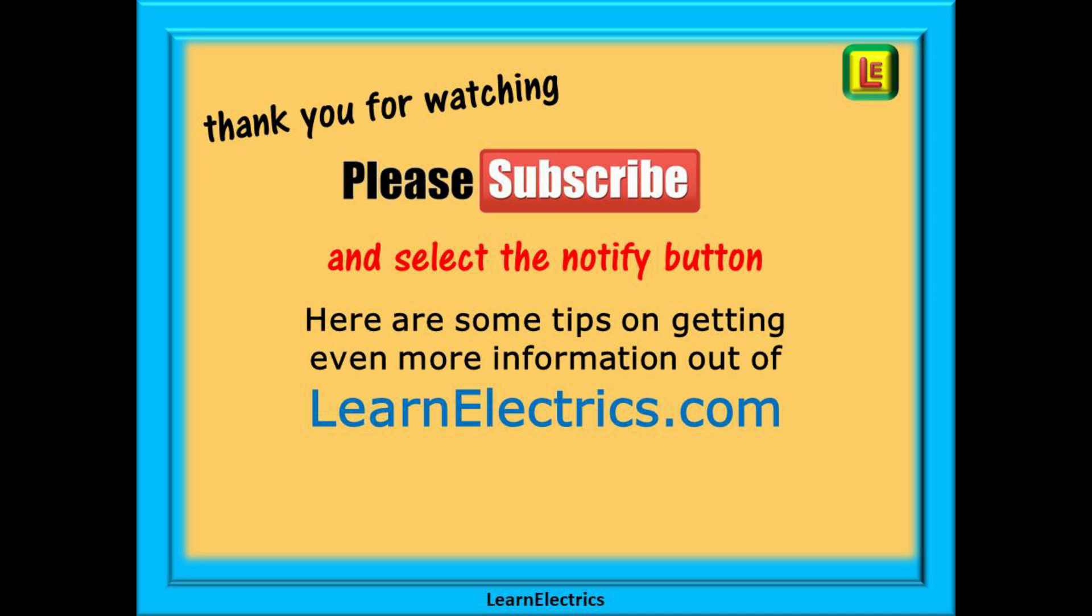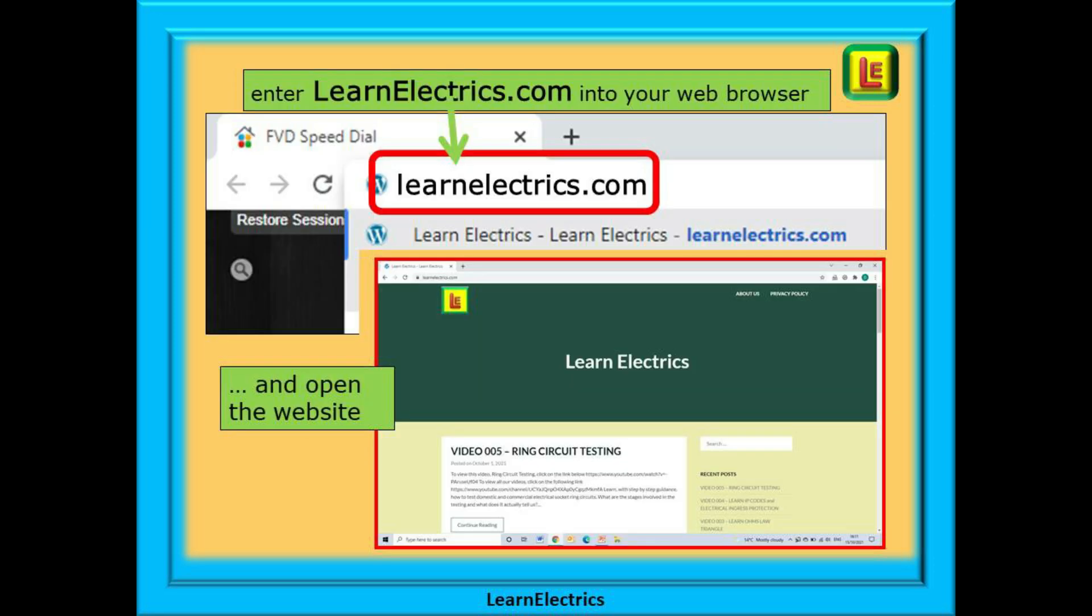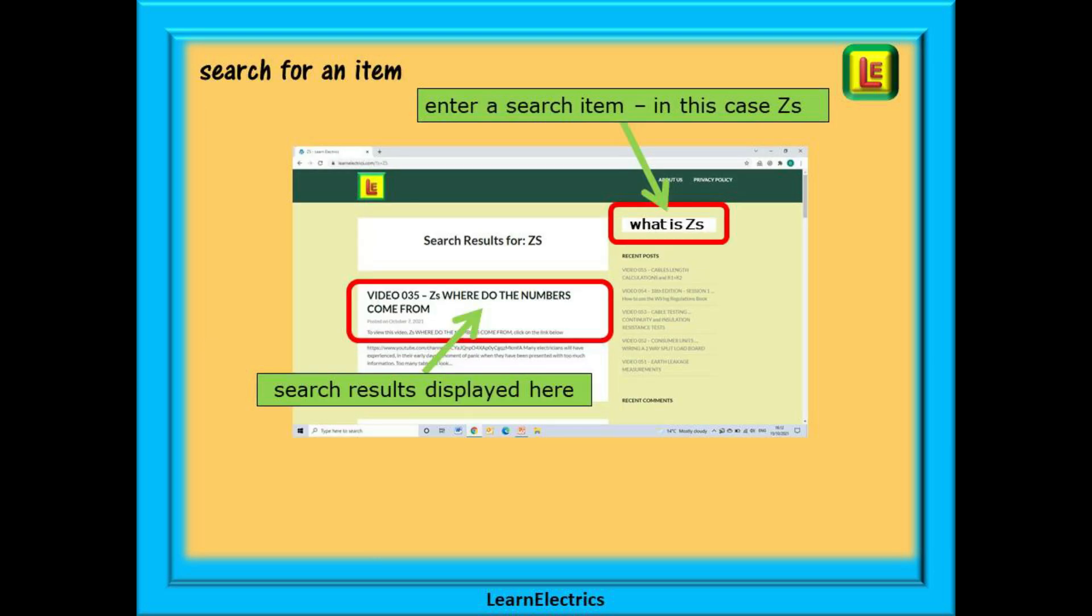Here are some tips on getting even more information and help out of LearnElectrics.com. At your web browser enter LearnElectrics.com into the search bar, select LearnElectrics.com from the choices offered and the website as shown will open up for you. You now have a couple of choices. You can search for a help item or any video by entering a keyword into the search bar on the right. Click on return and all the help files and videos with that word in the title will be listed for you. They will be shown with a short description. Click on continue reading for more information. Each video listed will have a link shown that will take you directly to that exact YouTube video.